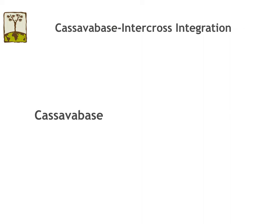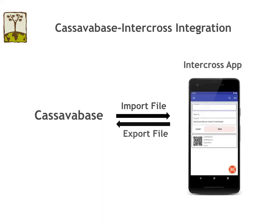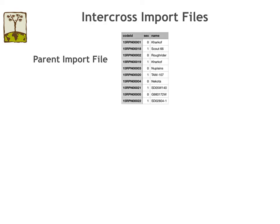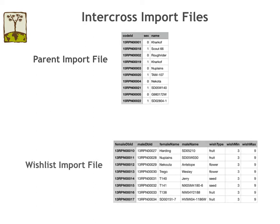With our CassavaBase InterCross integration, users can use CassavaBase to generate InterCross import files. After collecting data in the field using InterCross, users can upload the crossing data back to CassavaBase, where it will be automatically aggregated. InterCross supports two types of import files: parent files, which contain information about parents used in crosses, and wishlist files, which also contain additional info such as the minimum and maximum number of each activity. I will show you how to use CassavaBase to generate these two types of import files.